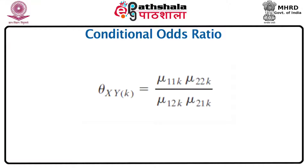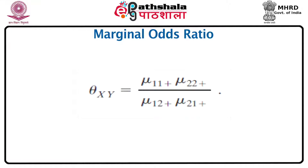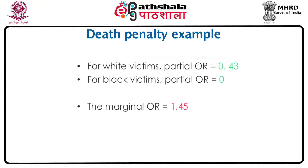I am not restricting to 2x2x2 tables but considering general categorical data where each of x, y, z can lie in any number of categories. Similarly the marginal odds ratio theta_xy is defined as (mu_11+ * mu_22+) / (mu_12+ * mu_21+), where the plus indicates that we have summed the probabilities over all levels of z. Applying this to the death penalty example: for white victims the partial OR is 0.43, for black victims the partial OR is 0, but the marginal OR is 1.45 — which is on the other side of 1 — hence the conflicting conclusions.